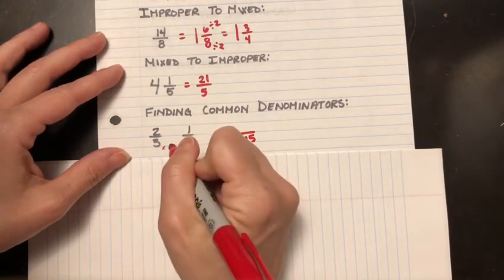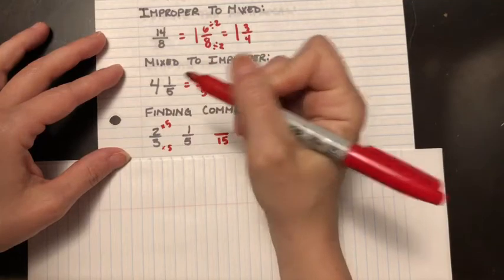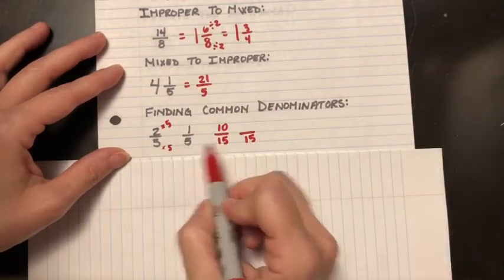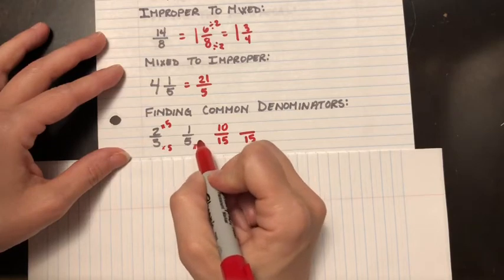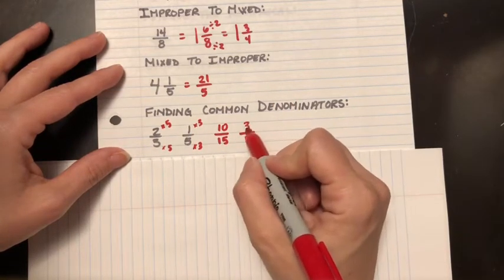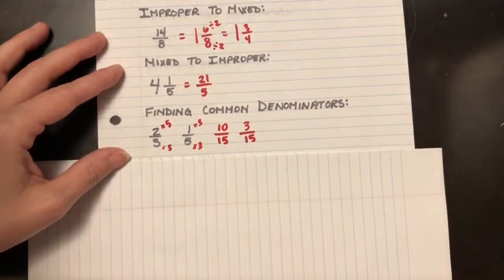So both are going to become 15. To get from 3 to 15, I'm multiplying by 5, which means I multiply that numerator by 5. So 2 times 5 gives me 10. Here I've got 5—to get to 15 I multiply it by 3. So I multiply the top by 3, and that gives me 3 fifteenths.